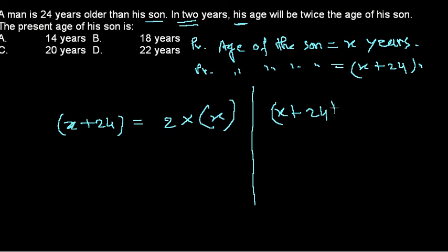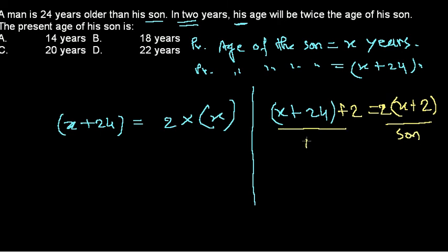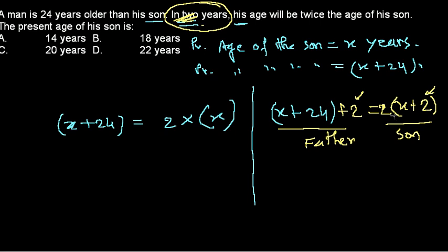In two years, the father's age will be X plus 24 plus 2, and the son's age will be X plus 2. Many students use the present ages and write the equation directly — that is wrong. The correct approach is to add plus 2 to both the father's and son's ages before setting up the equation.